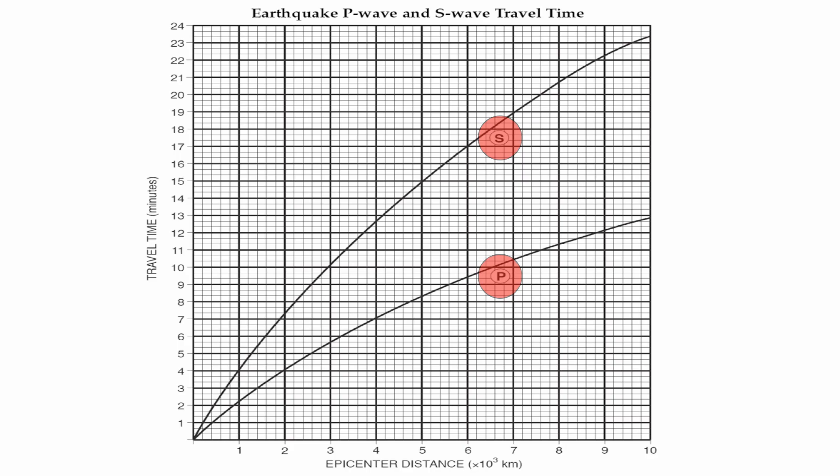It's very important to keep your P-Wave and S-Wave curves straight. Notice that the closer together they are, the smaller the lag time. The farther apart they get, the bigger the lag time, and the farther away those waves are going to be from the epicenter. P-Waves travel faster than S-Waves, so the farther the wave travels, the bigger the gap you're going to get between your P-Wave arrival and S-Wave arrival.